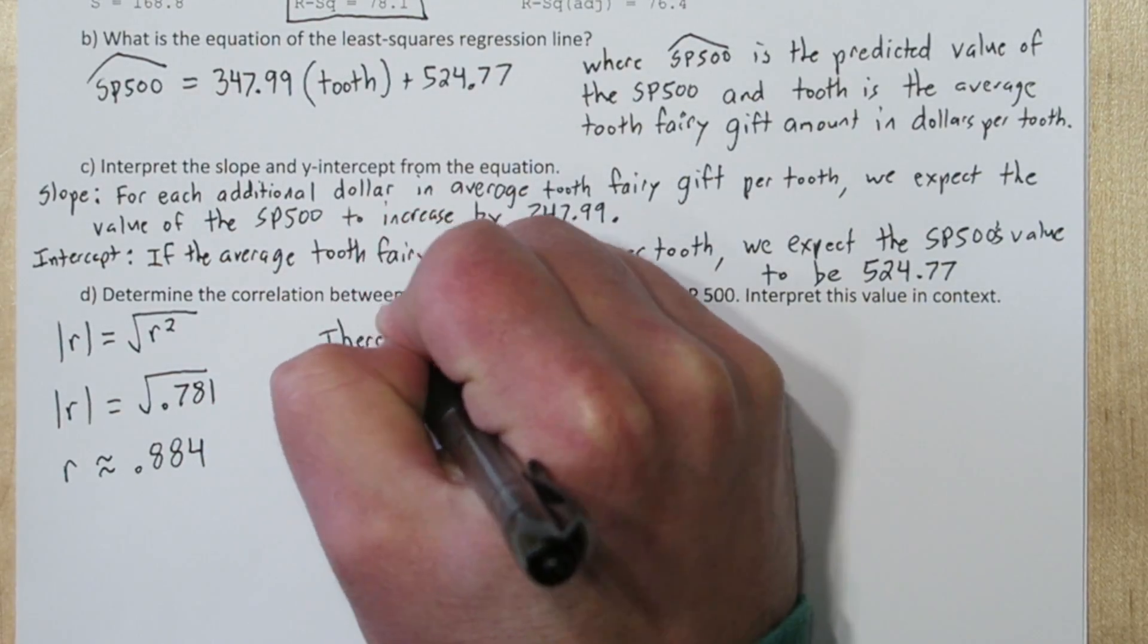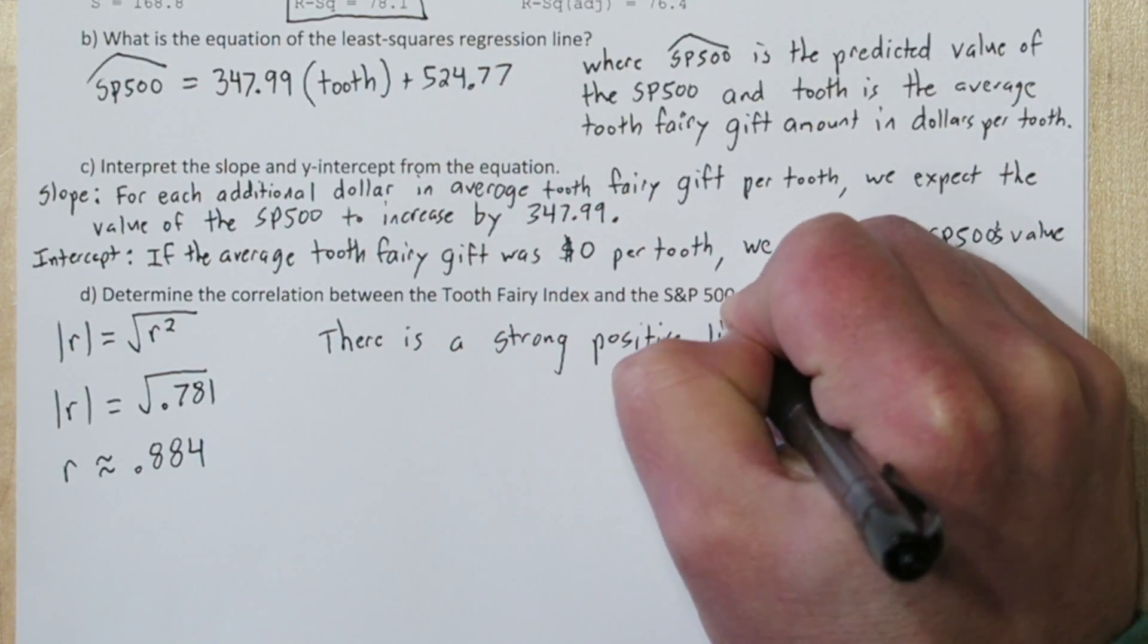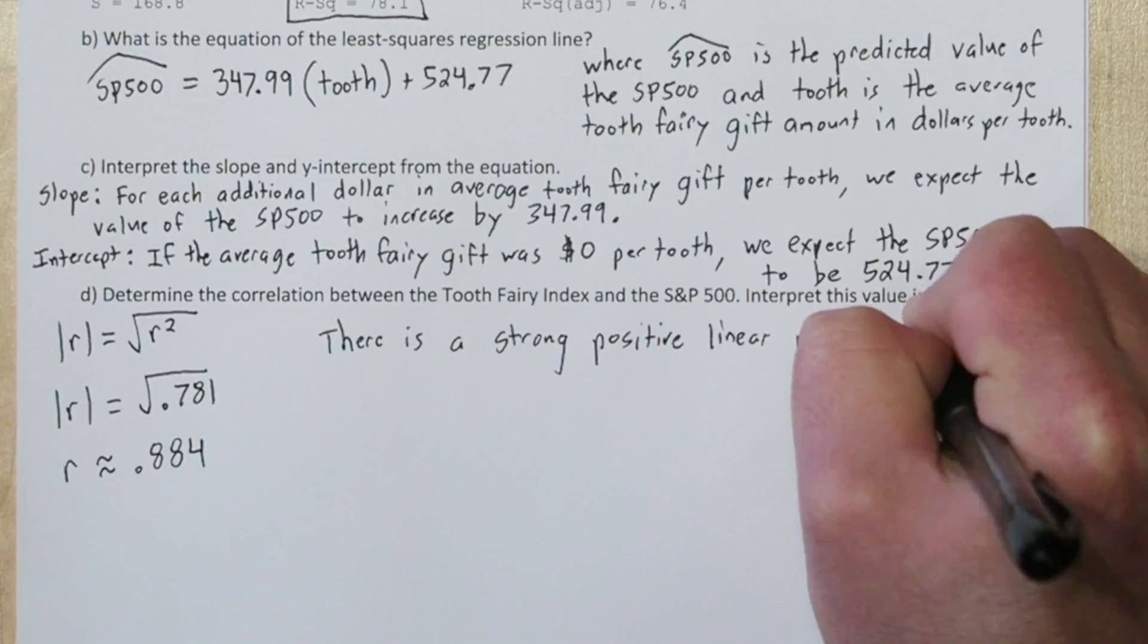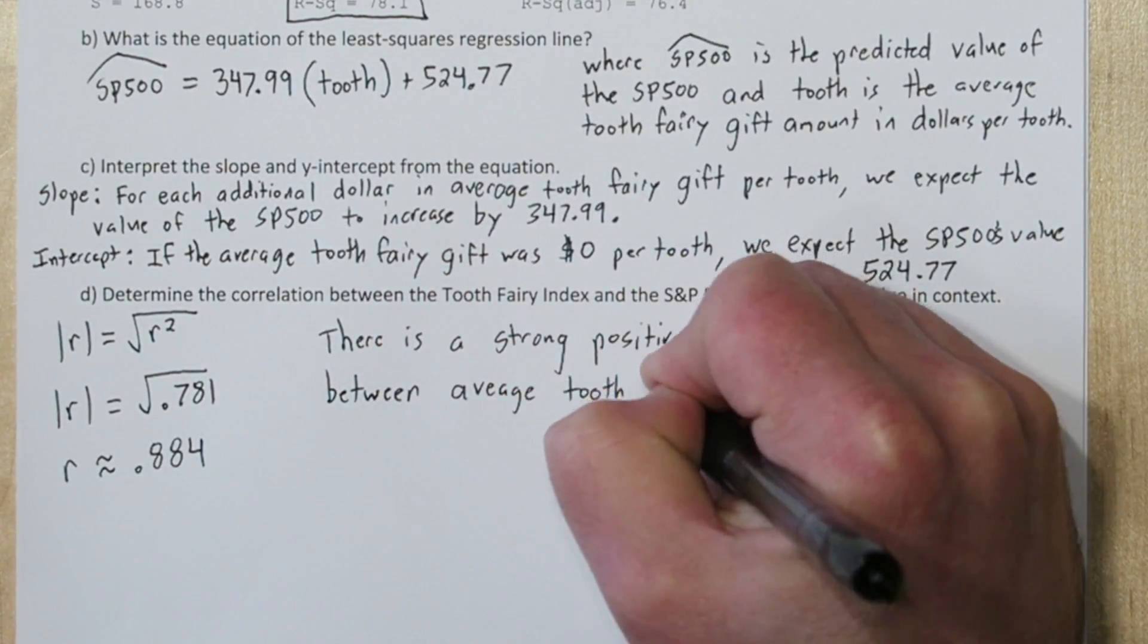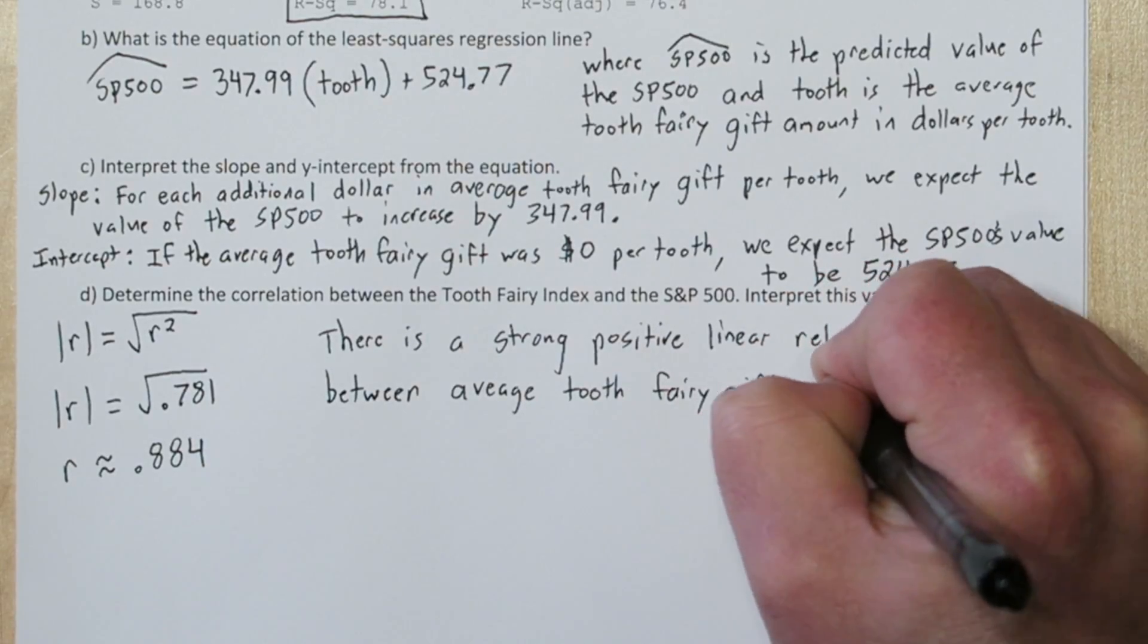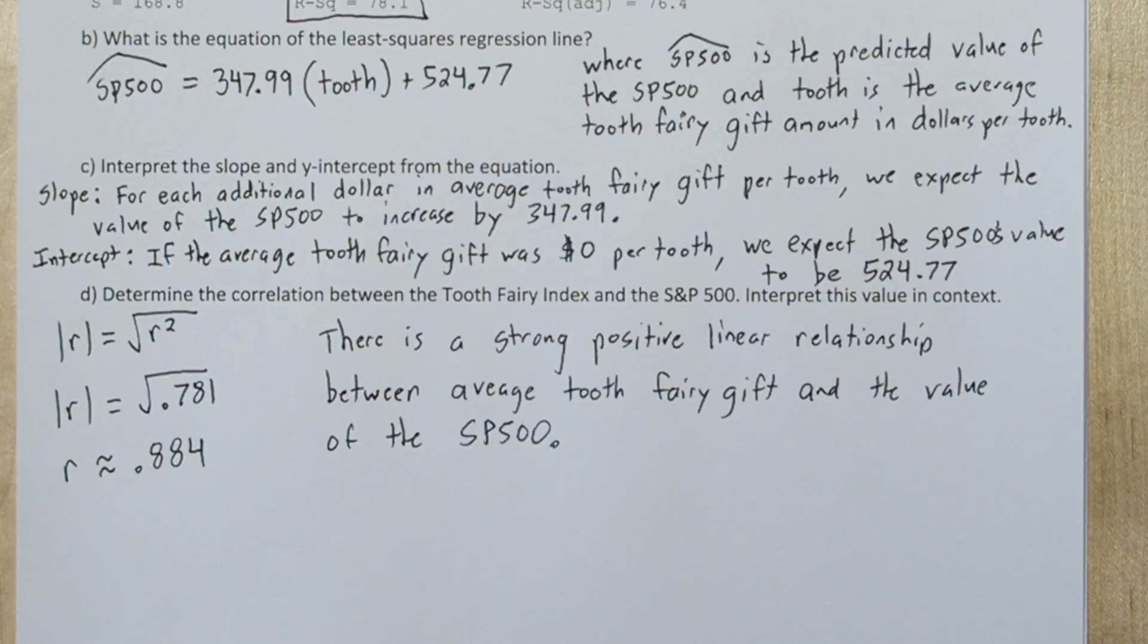Now the maximum r could be is 1, which would be a perfect positive linear relationship. So 0.884 is a strong correlation. We'll interpret it like this: there is a strong positive linear relationship between average tooth fairy gift and the value of the S&P 500.